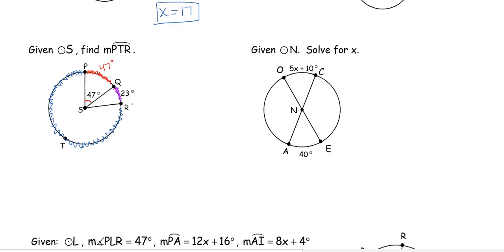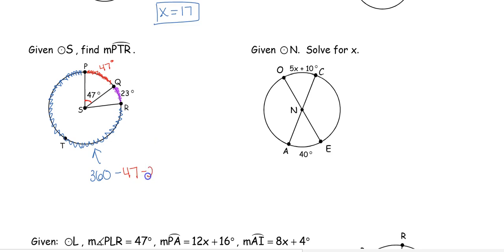There are 360 degrees in a circle, so that's how many degrees are in the arc going all around. This part is 47 and this part is 23 — everything else is what we're looking for. To find the major arc on the outside, we do 360 minus 47 minus 23. So the measure of arc PTR is 290 degrees.